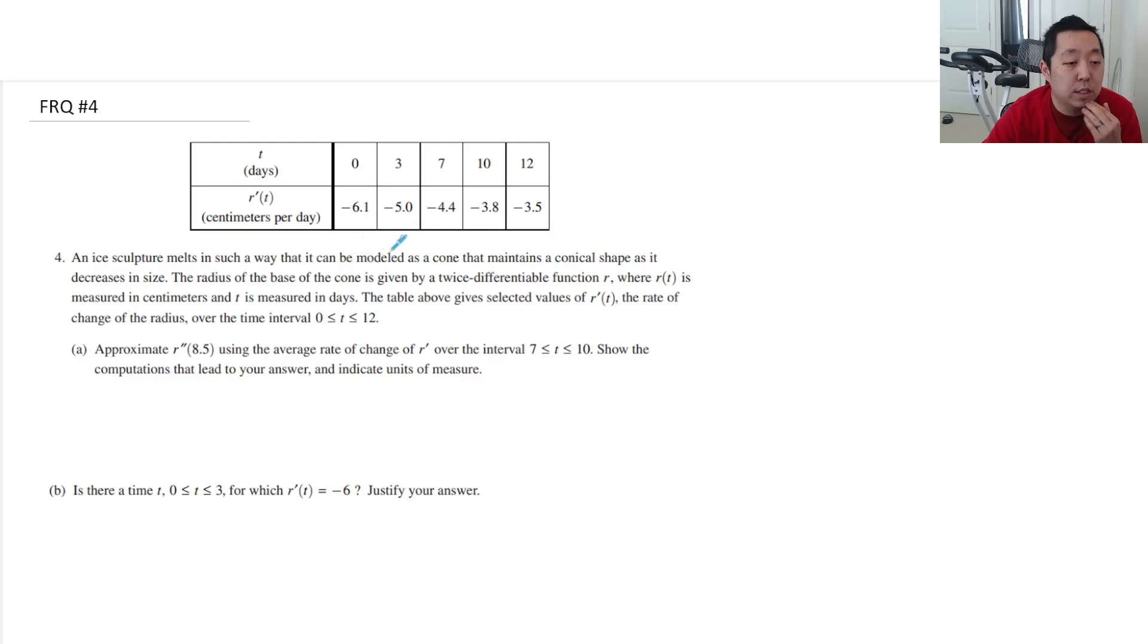An ice sculpture melts in such a way that can be modeled as a cone that maintains a conical shape as it decreases in size. The radius of the base of the cone is given by the twice differentiable function r, where r(t) is measured in centimeters and t is measured in days. The table gives the selected values of r'(t).